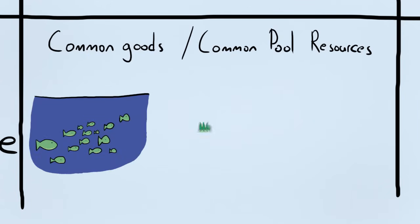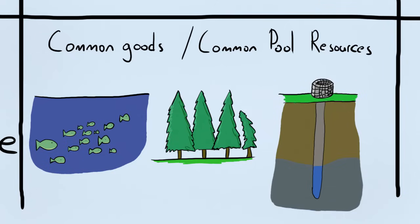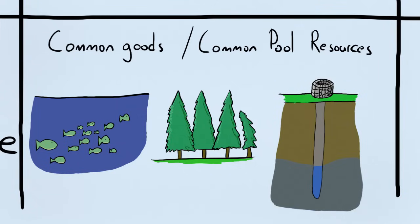Things that are rivalrous and non-excludable we call common goods or common pool resources. This applies to a lot of natural resources like fisheries, forests, and certain water resources. It's hard to stop people from using them, and the items you take can't be shared with someone else.